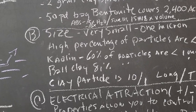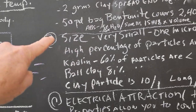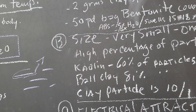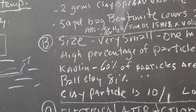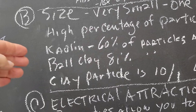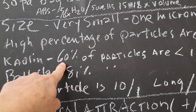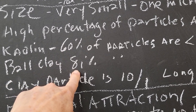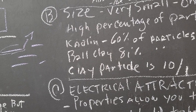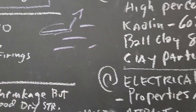The next agent that accounts for plasticity is particle size. Clay particles are very small — one micron, which is one one-thousandth of a centimeter. Kaolin is not as plastic as ball clay, and you can see that by particle size: sixty percent of kaolin particles are less than one micron, while eighty percent of ball clay particles are less than one micron, which shows ball clay would be more plastic. Clay particles are also ten-to-one long versus thick, giving them a large surface area.